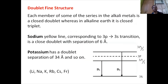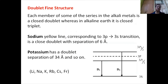Each member of the series in alkali metal is a closed doublet. The sodium yellow line corresponding to the 3P to 3S transition is a closed doublet with a separation of 6 angstroms. Similarly, potassium has a doublet separation of 34 angstroms, and each member of this group will show the doublet fine structure.